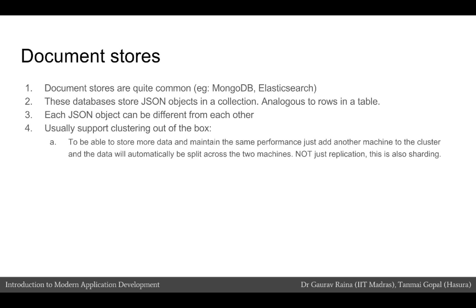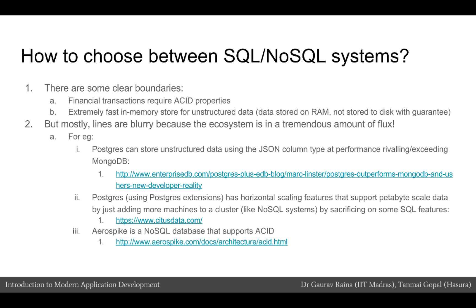We do not have to worry about how to shard our data or how to do the replication — this happens automatically. When choosing between SQL and NoSQL systems, sometimes there are very clear-cut use cases. For example, if we want to support financial transactions that require ACID properties, then in such a situation a developer should choose a mature SQL system that supports transactions as the primary database.